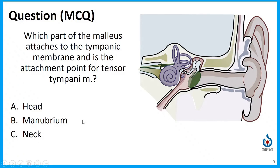So let's assess ourselves. Which part of the malleus attaches to the tympanic membrane and is the attachment point for the tensor tympani muscle — is it the head, the manubrium, or the neck? The correct answer is the manubrium. The head of the malleus is followed by the neck, and then the manubrium is the portion that articulates with the tympanic membrane.